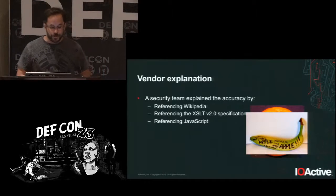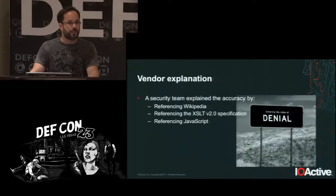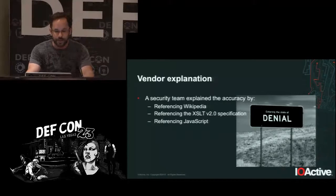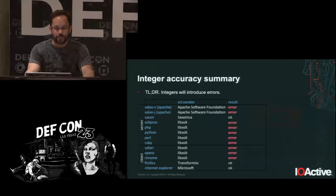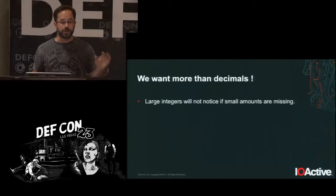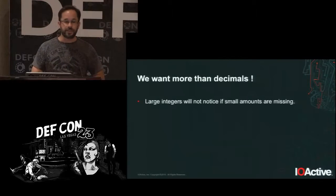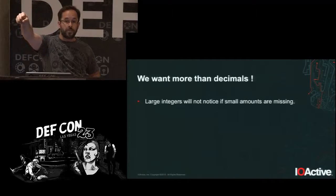I also heard I should read the XSLT V2 specification, but this was affecting purely V1. Another response was that you can find this in JavaScript as well — which is true, but I wouldn't want this in any programming language because these errors are everywhere. The key insight: if you put a number — one followed by 17 zeros — and subtract one, the programming language will not notice the one is missing.